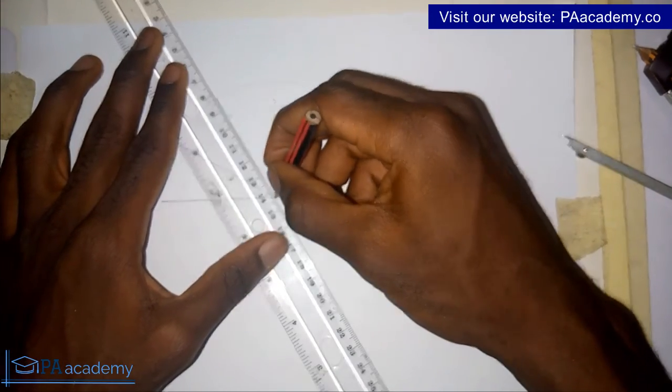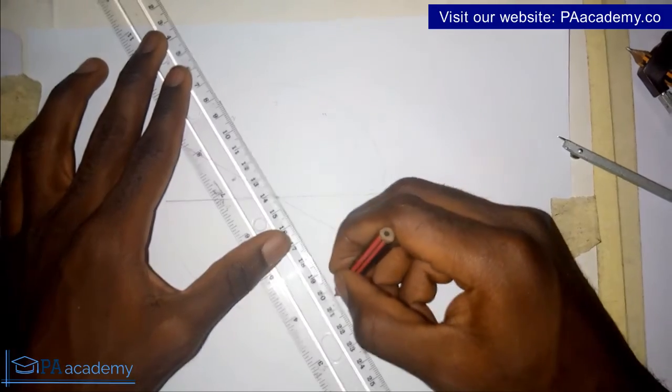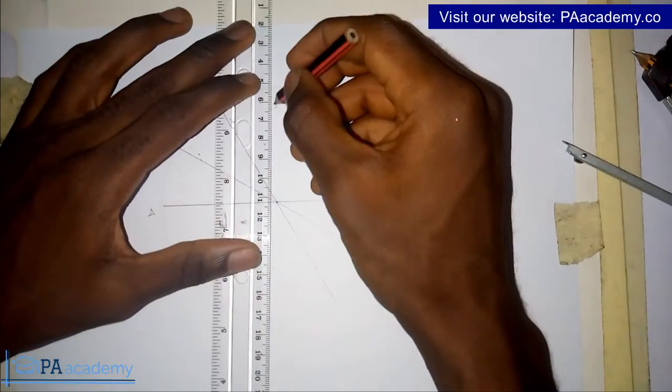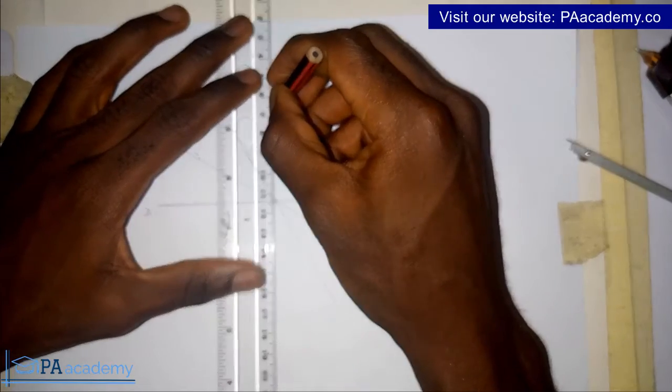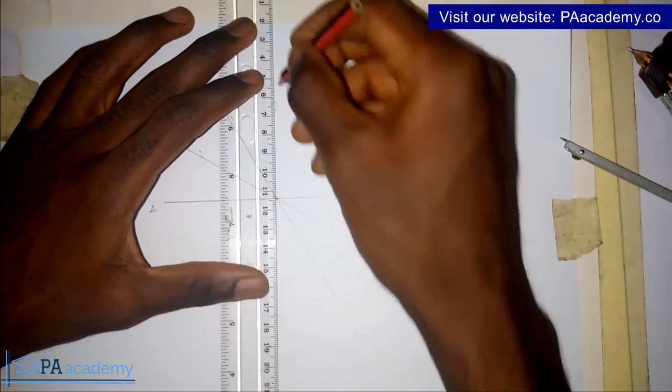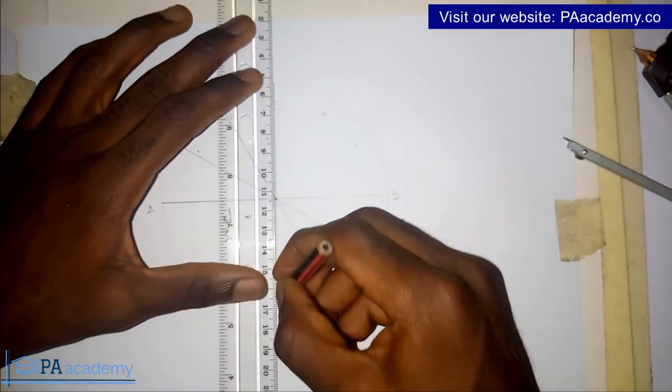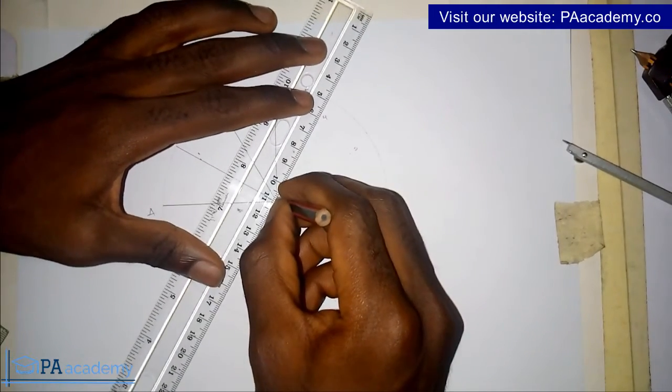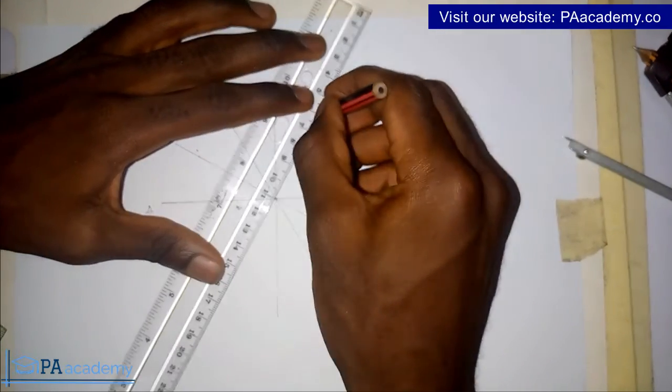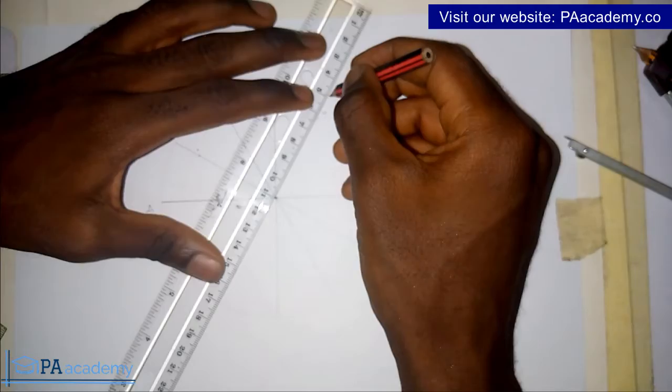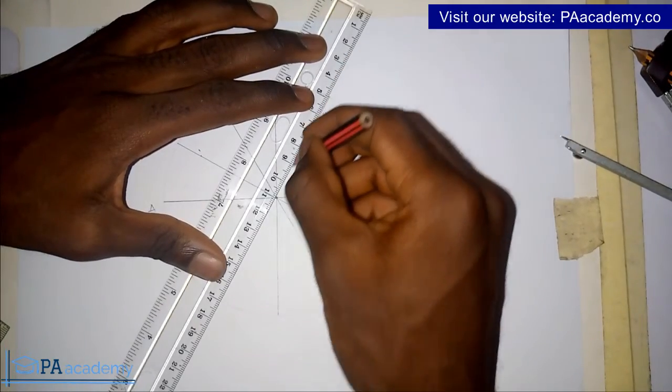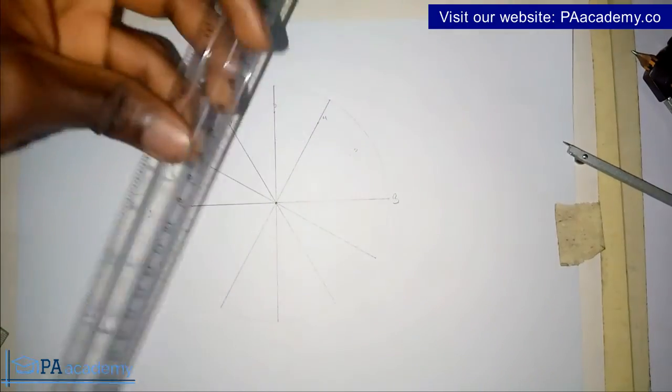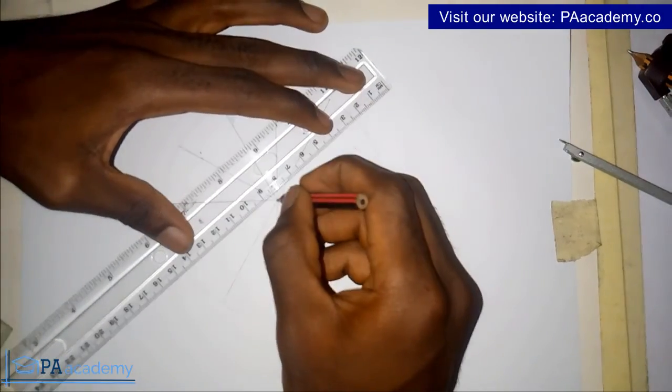So from the circumference, through the center of the circle, to the other part of the circumference. This is the fourth point that we marked. So from the circumference, through that point, through the center, to the other parts on the circumference of the circle.